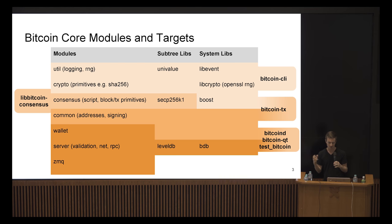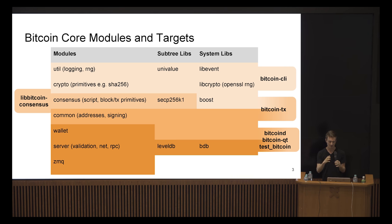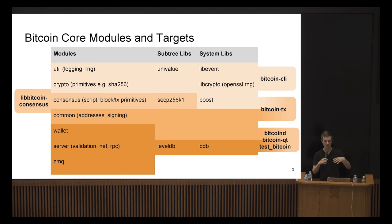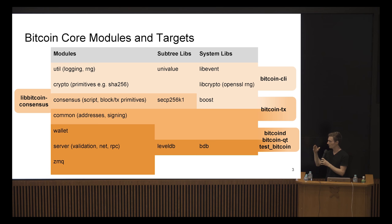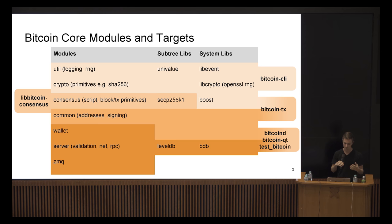Another build target is libbitcoin consensus, which is a long-term project designed to provide just a library that takes care of all the consensus going on. You could have your node, and then if consensus changes — maybe there's a soft fork or a hard fork — you only update that library and you're running the latest consensus without having to upgrade your whole company infrastructure or your RPC interface. Right now libbitcoin consensus is really minimal — it can only do stateless checks such as simple transaction verification.